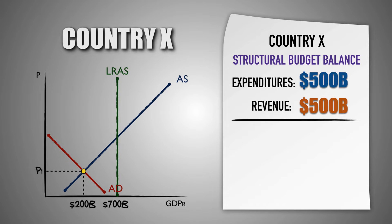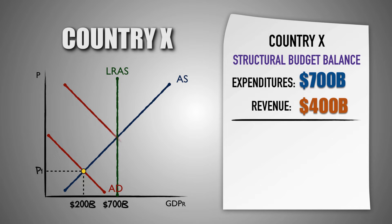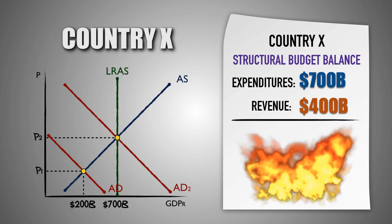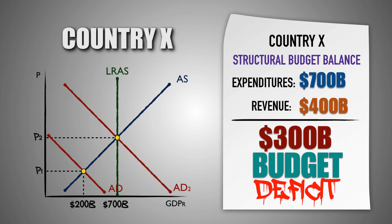If instead the government decided to increase its expenditures by $200 billion and combine that with a $100 billion decrease in personal taxes, it would increase aggregate demand and generate $500 billion in real GDP output, returning the economy to full employment. However, because the government increased its spending by $200 billion, it would open a $200 billion budget deficit in country X. Then, when the government reduced taxes by $100 billion, it increased the budget deficit by an additional $100 billion. The entire fiscal stimulus package opened a $300 billion budget deficit in country X.